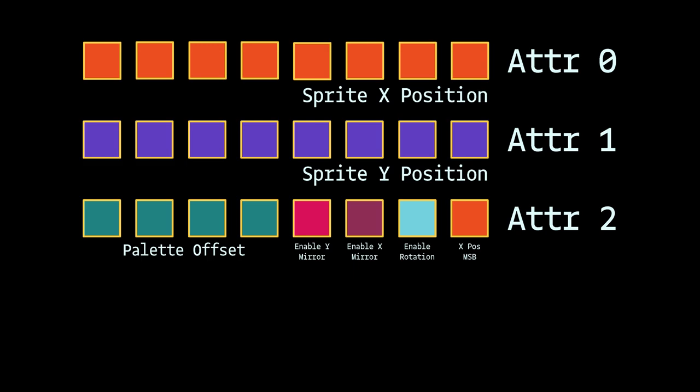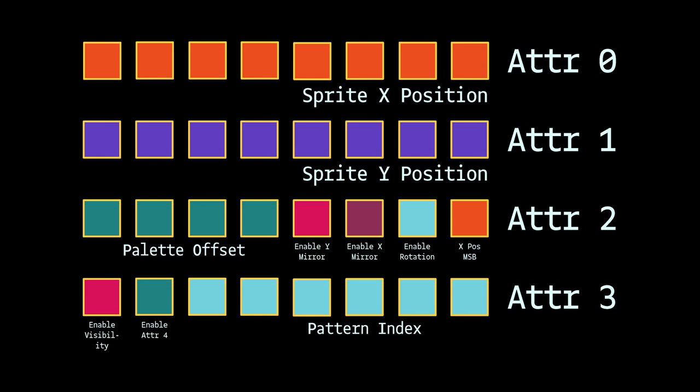Attribute 0 is the sprite's X position's least significant bits. Attribute 1 is the sprite's Y position's least significant bits. Attribute 2 is a mixture of many things — the palette offset, mirroring, rotating, the 9th bit for the X coordinate (since the sprite display area is wider than 255), and a flag for palette offset relativity. Attribute 3 contains a flag to mark the sprite as visible, a flag to enable Attribute Byte 4, and 6 bits for the sprite pattern ID — that's where you tell the sprite system what image to put on screen. Attribute 4 is optional and depends on whether you switched it on in Attribute 3.